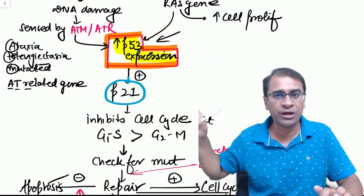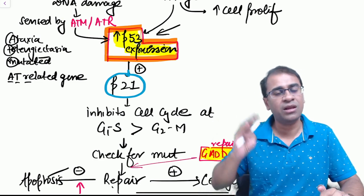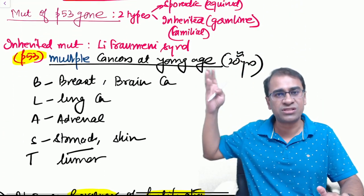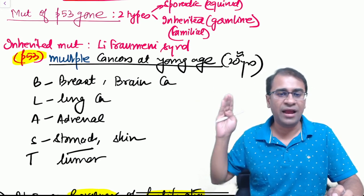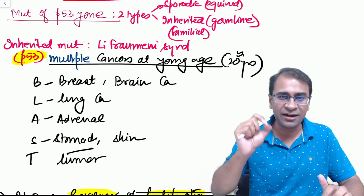p53 will activate p21, and I hope you remember from the CIP/KIP, the p21 inhibits at G1-S and G2-M, and that is how the cell cycle stops, repairs, and if possible will also cause apoptosis. On mutation it will lead to this syndrome with a mnemonic BLAST: breast, brain, lung, adrenal, stomach, and skin tumors can be caused by p53 mutations. The inherited form is called Li-Fraumeni syndrome.